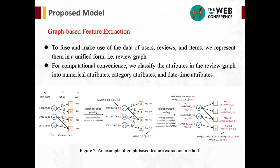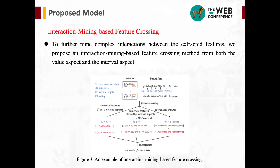To fuse and make use of the data of users, reviews, and items, we represent them in a unified form — that is, a review graph. In the review graph, users and items are denoted as nodes while reviews are denoted as edges. For computational convenience, we classify the attributes in the review graph into numerical attributes, category attributes, and daytime attributes.